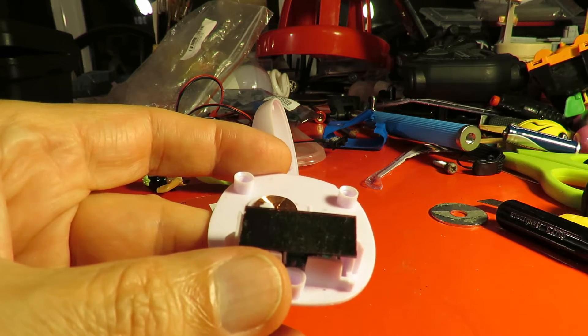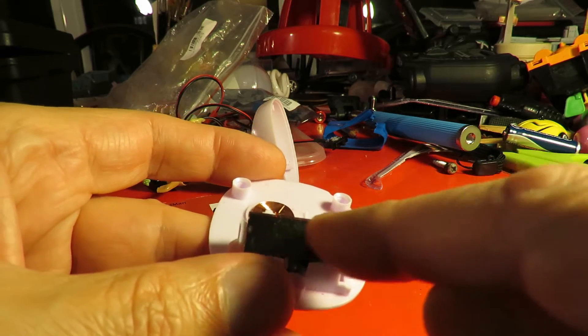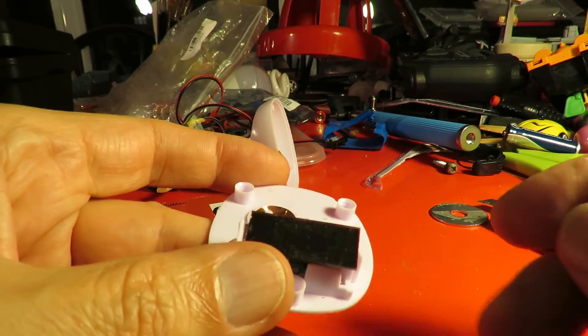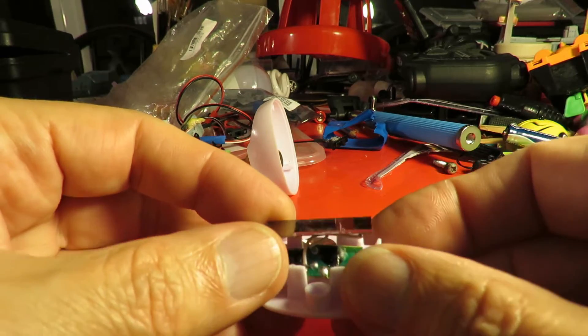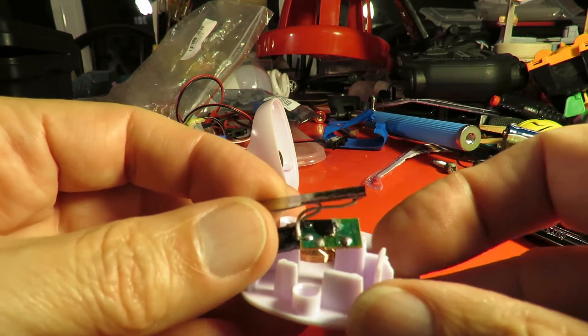We'll have a quick look at what we've got in the base here. Obviously we've got the solar panel. If we lift it up carefully, underneath we have the circuit board.